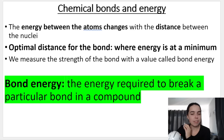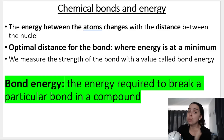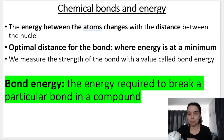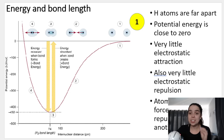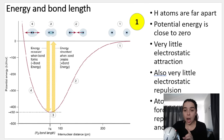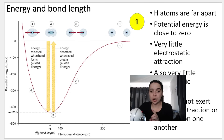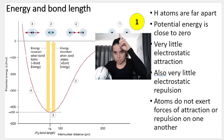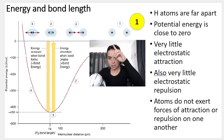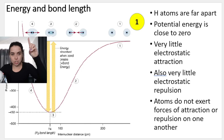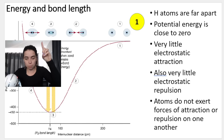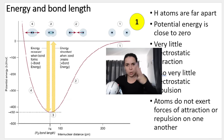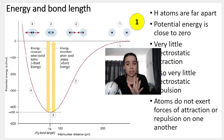The bond energy is the energy required to break a particular bond in a compound. This is how the graph works. We're going to read the graph from right to left, starting at situation number one and ending at situation number four - reading the graph a bit backwards, but you'll see what I mean.